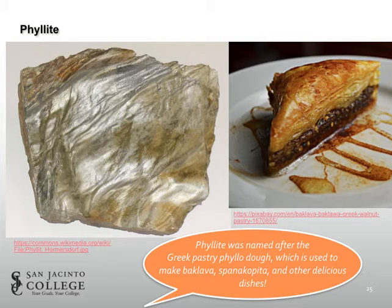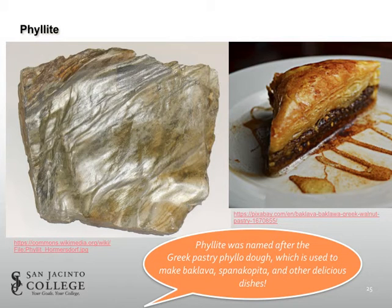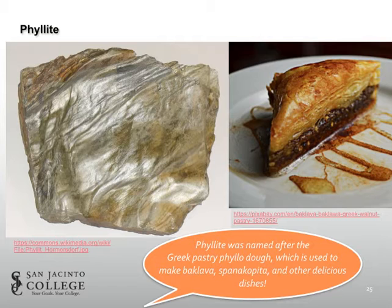With increasing metamorphic grade, you go from slate to phyllite. Phyllite is named similarly to the Greek pastry dough, phyllo dough — so if you've ever had baklava or spanakopita, it's a very finely layered dough. You can see that we have fine layers in this phyllite, and it is extremely shiny. The difference between slate and phyllite is that phyllite has been exposed to slightly higher temperatures and pressures, which has allowed those clay crystals in the protolith mudstone to convert to very small mica crystals — predominantly muscovite, though you can also have biotite micas.